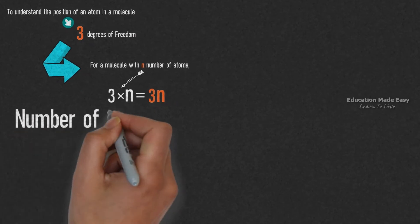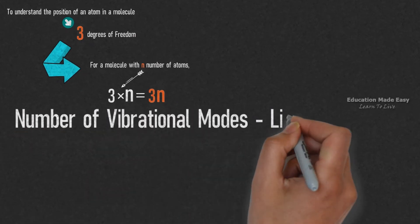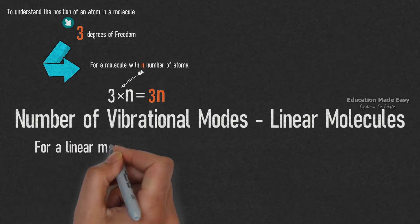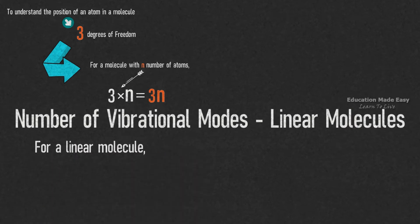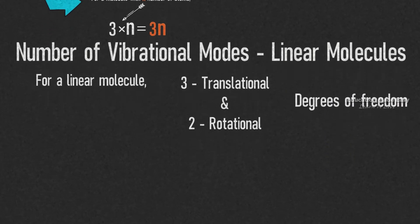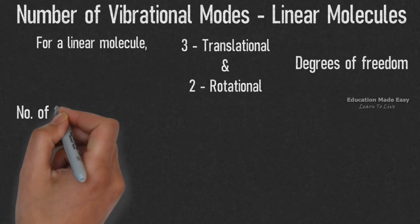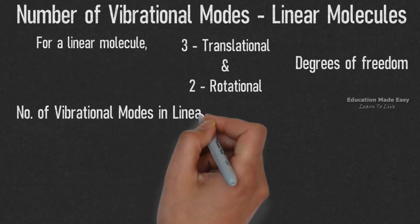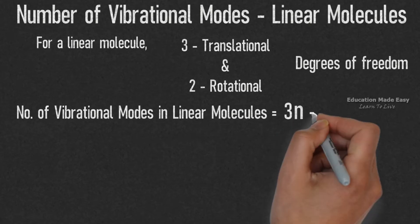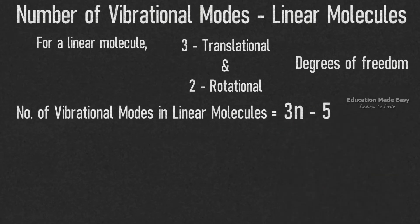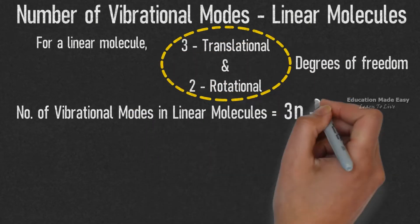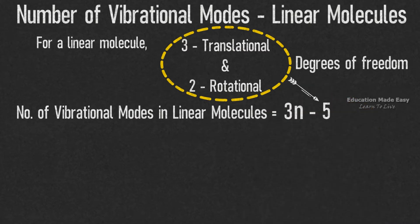Now let us learn about the number of vibrational modes in linear molecules. For a linear molecule, there are 3 translational and 2 rotational degrees of freedom. Thus, the number of vibrational modes in linear molecules is equal to 3n − 5, where the sum of 3 translational and 2 rotational degrees of freedom represents 5.